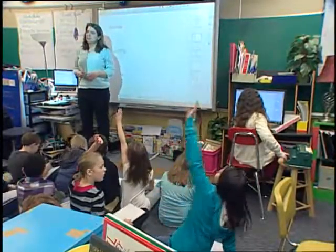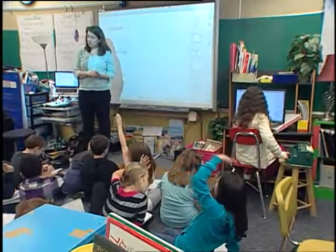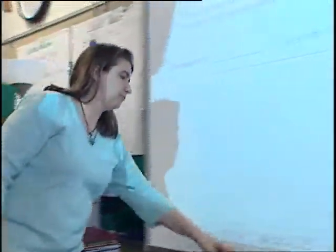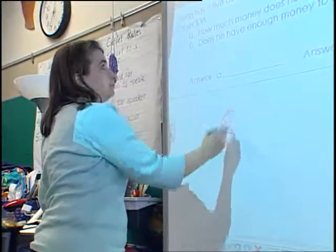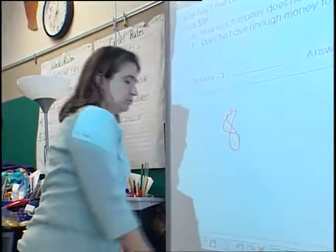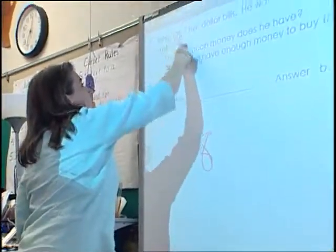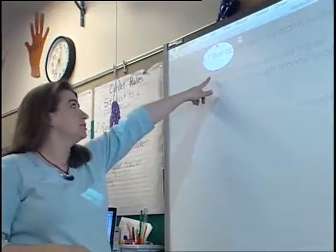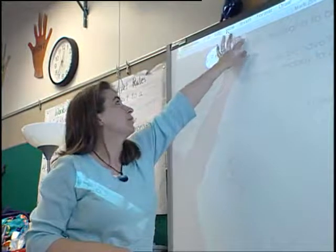This is a smart board — an interactive whiteboard. You can write on it and it takes anything they have on the computer and projects it there. We can use it for math, for reading, all those different areas. I can write on the board and we can solve different problems. It helps to be able to highlight different things to direct the students' attention to whatever I'm pointing out or whatever we're working on.